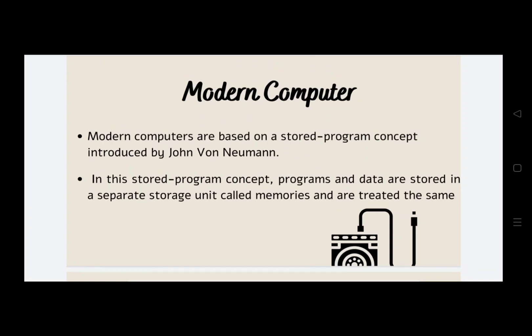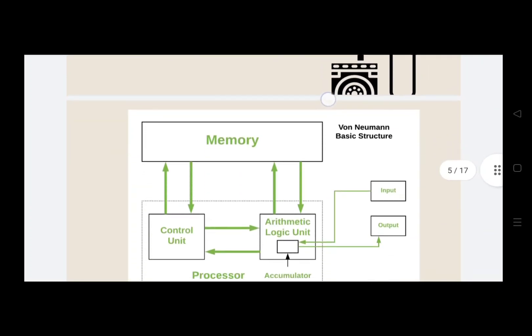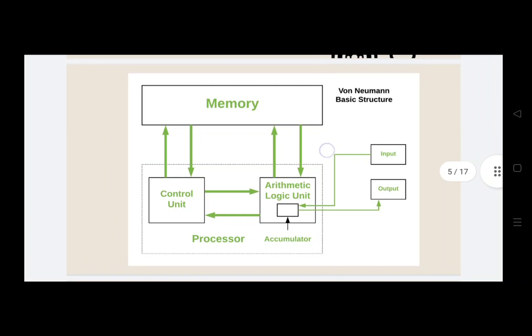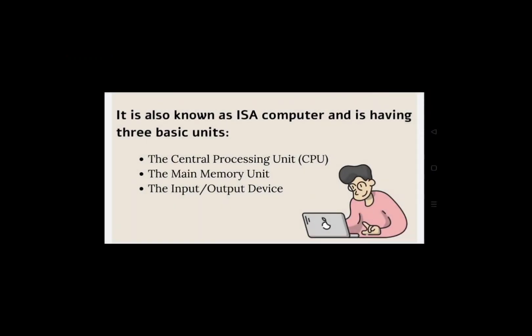The first modern computer was the ABC — Atanasoff-Berry Computer. Here is its diagram, which consists of an arithmetic logic unit, control unit, memory storage, processors, accumulators, input device, and output device, which we are going to explain in the upcoming slides.